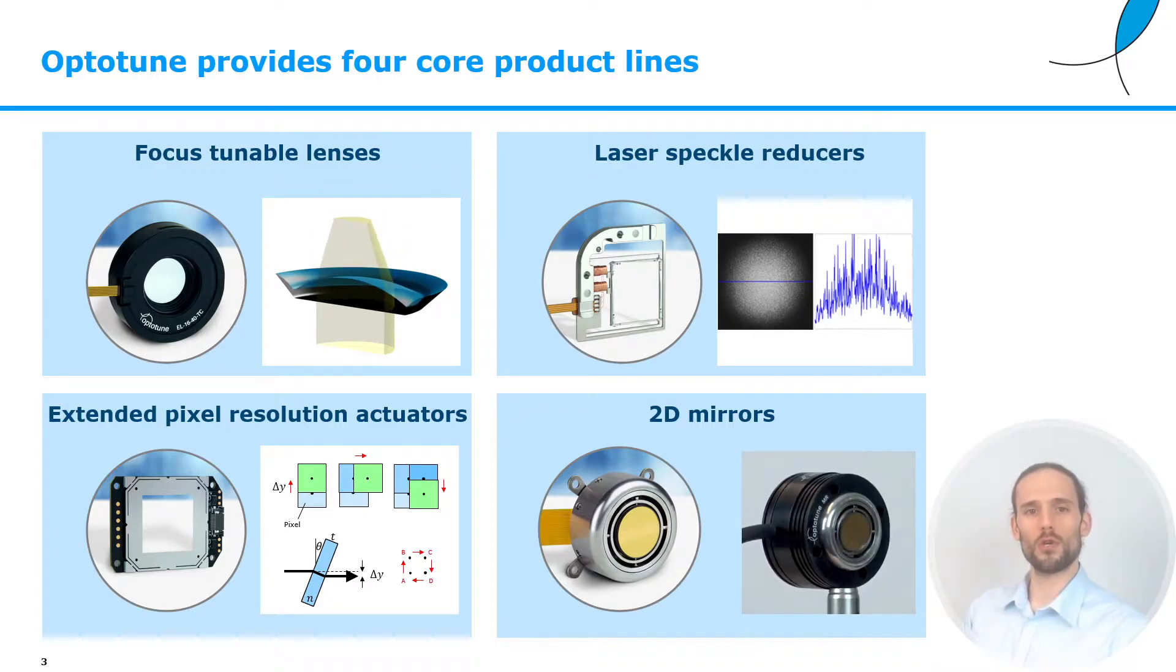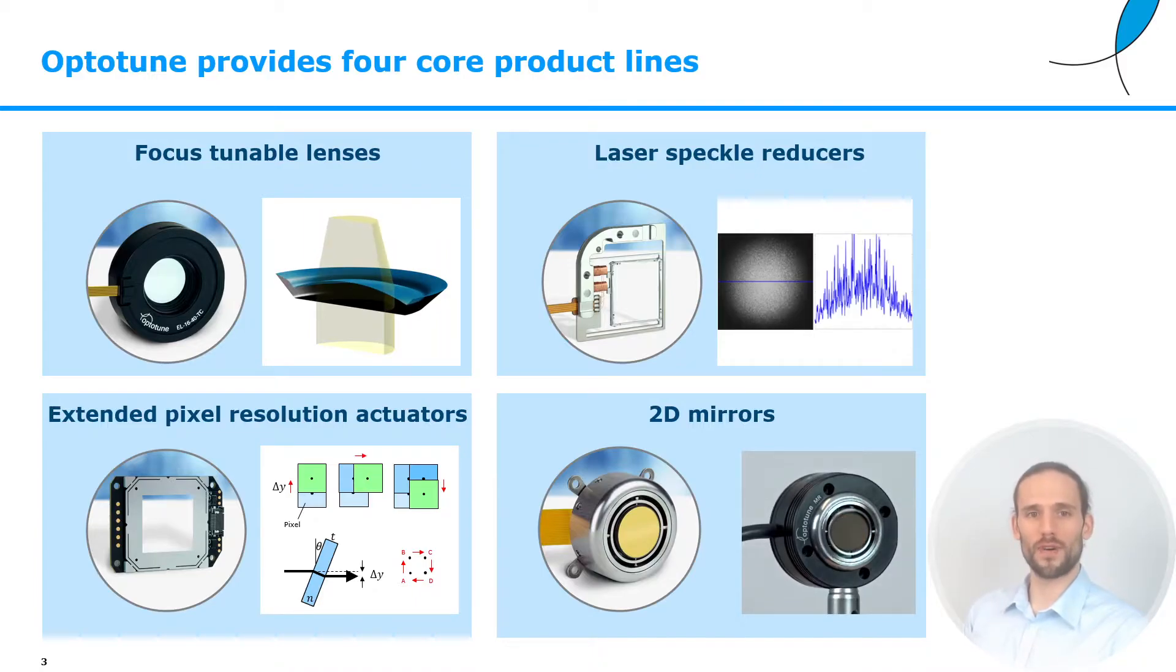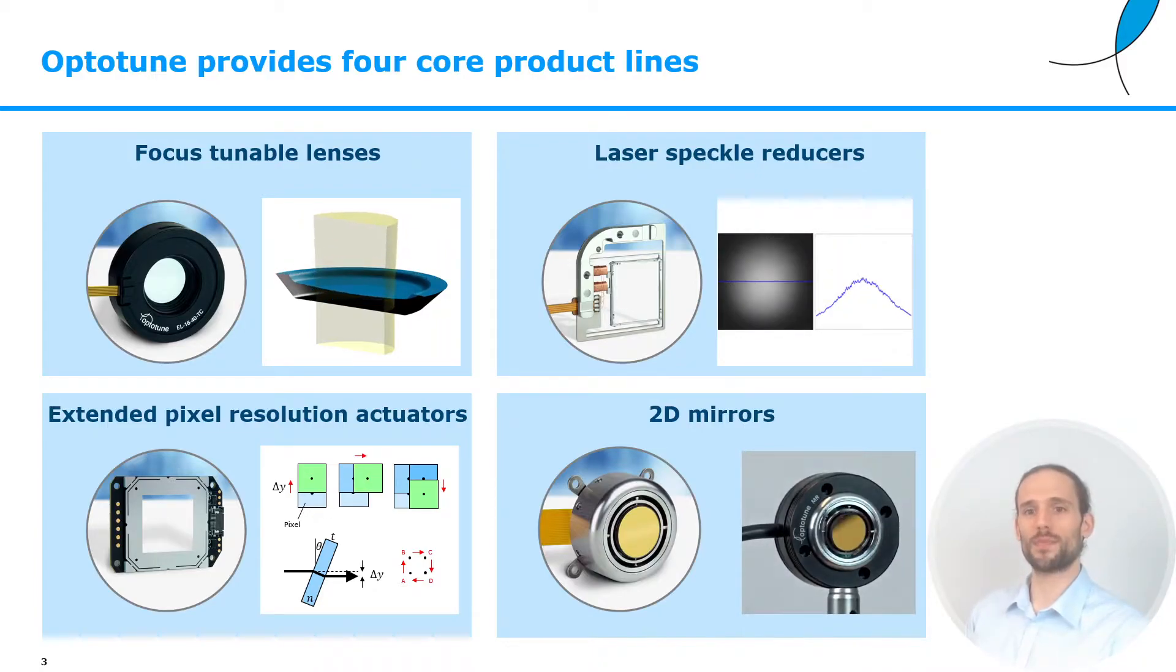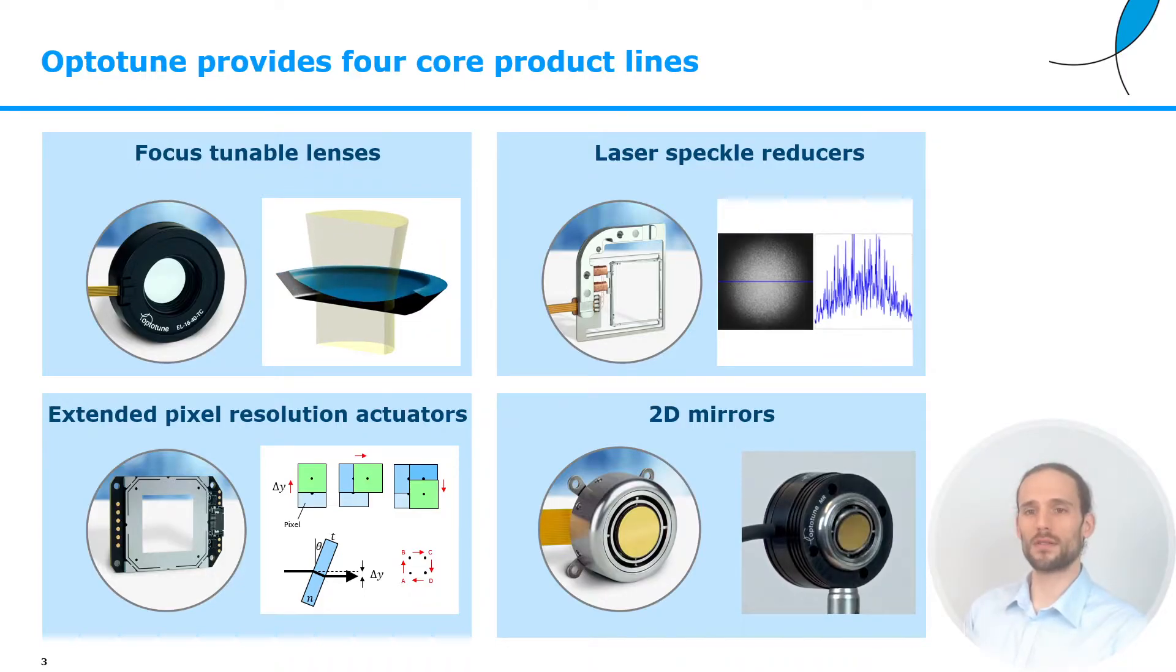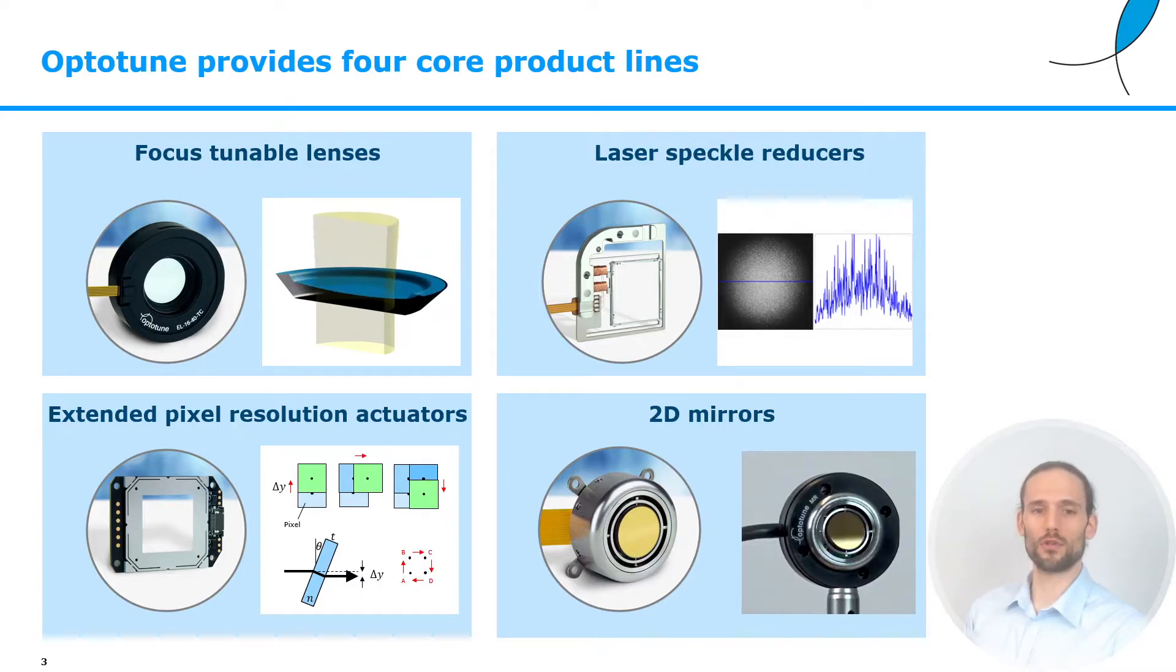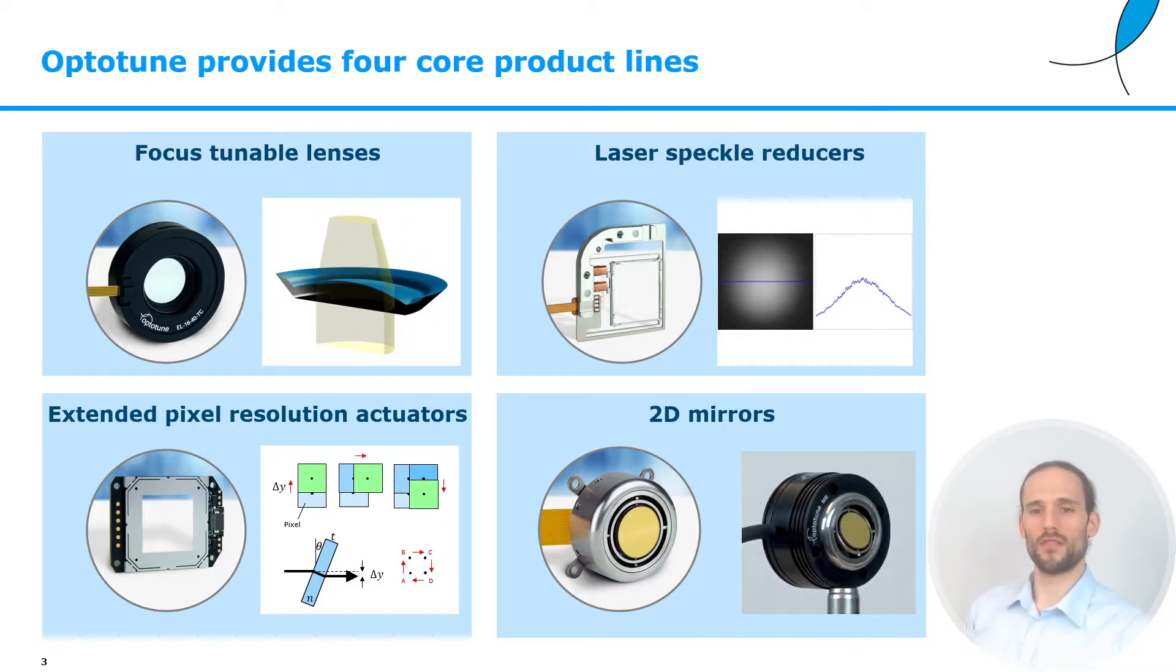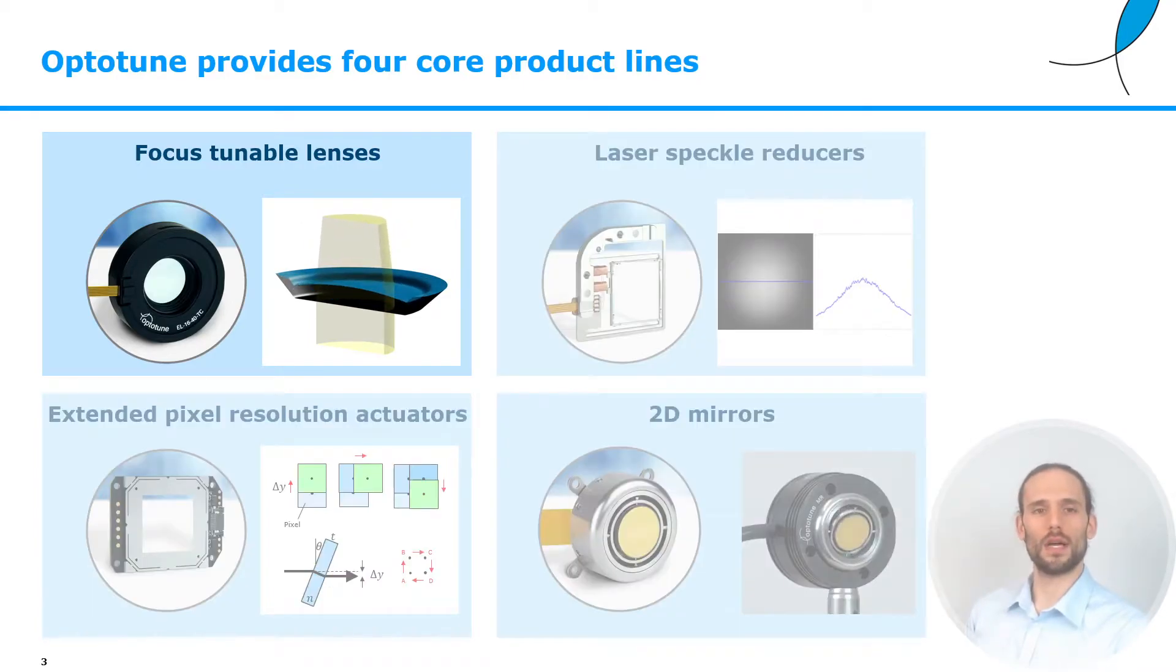Here at Optitune we use our knowledge to provide customers a solution for dynamic light control. Our core product lines are four. We have focus tunable lenses for fast light focusing, then we have laser speckle reducers which are basically oscillating diffusers used in projecting systems to average out speckled patterns. Then we have XPRs, extended pixel resolution upscalers, which are basically tilting plates used in projecting systems to increase the resolution up to four times the magnitude. Finally, we have two-dimensional mirrors for fast beam steering in projection.